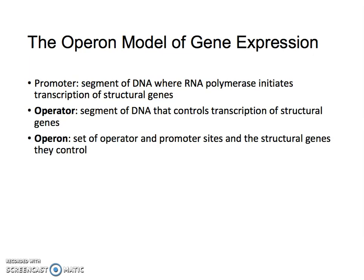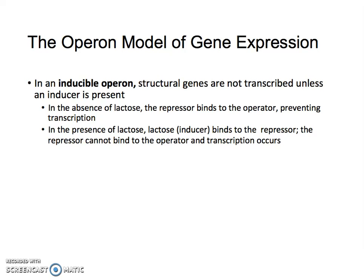The operon model of gene expression: the promoter is the segment of DNA where RNA polymerase sits down for transcription of structural genes. You have an operator segment that controls transcription of structural genes, and then you have an operon, which is a set of operator and promoter sites and the structural genes they control. This is an inducible operon, meaning it needs to be turned on. In the absence of lactose, the repressor binds to the operator. Glucose is more common in the environment than lactose, so why make metabolic enzymes to metabolize lactose when it's not always available? In the presence of lactose, the lactose inducer binds to the repressor, taking it off and allowing transcription of that protein to begin.